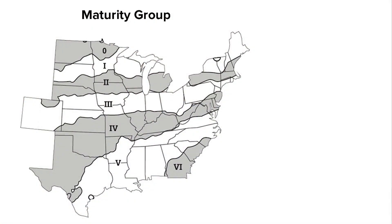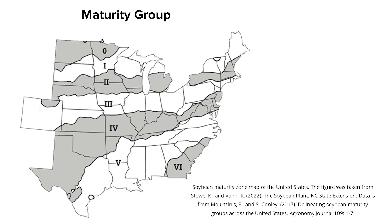The first thing to look at is maturity group. Varieties with an earlier maturity group — a lower number — will generally be grown in more northern areas, and higher numbers in more southern areas. One difference is that maturity group four varieties are also grown as far south as South Louisiana. There is more information available if you want to read more about maturity groups.